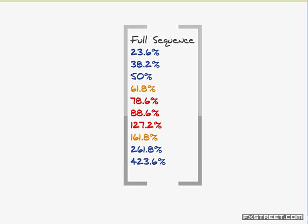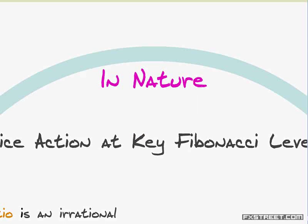Risk reward can be anything from around 5 to 1 all the way up to 20 to 1. The key Fibonacci levels to look for in complex symmetrical patterns are 78.6, 88.6, and 127.2, and obviously the Gartley pattern as well.